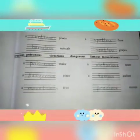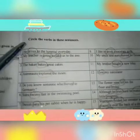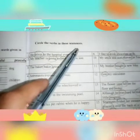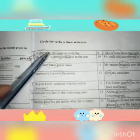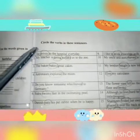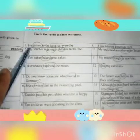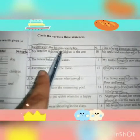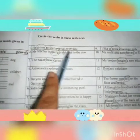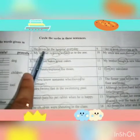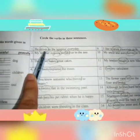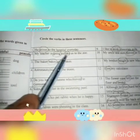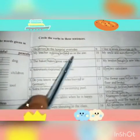Now we will do page number 15: circle the verbs in these sentences. A verb is a word which denotes an action. First line: he drives to the hospital every day — 'drives' is our verb, circle it. Next line: my teacher is going to take a trip to the zoo — 'going' and 'take' are the verbs, circle both.